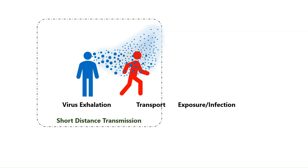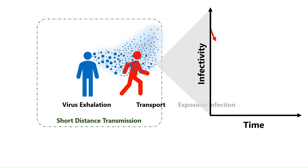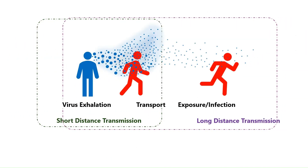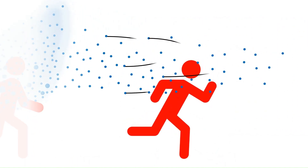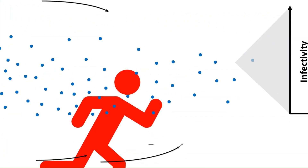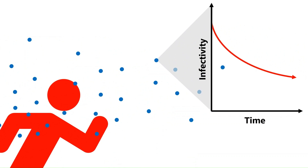If a healthy individual is in the plume, the likelihood of transmission is at its highest because the particles haven't been diluted yet, and biologically, not enough time has passed for the virus to decay — so the number of infectious particles is at its highest. Transmission beyond the plume is possible but far less likely, as the plume breaks down and significantly lowers the concentration of infectious virus. Time also provides opportunity for natural viral decay in the aerosol. Combined, this results in a significant lowering of transmission risk.